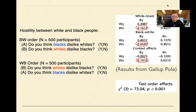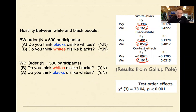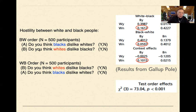We have a paper published in PNAS on applying quantum theory to order effects. Here's an example from a real Gallup poll done in the 1980s. They're investigating attitudes about hostility between white and black people. They ask questions like 'Do you think blacks dislike whites?' and 'Do you think whites dislike blacks?' but in different orders. In the black-white order, participants were first asked 'Do you think blacks dislike whites?' — yes or no — and then asked 'Do you think whites dislike blacks?' 500 people got it in that order.